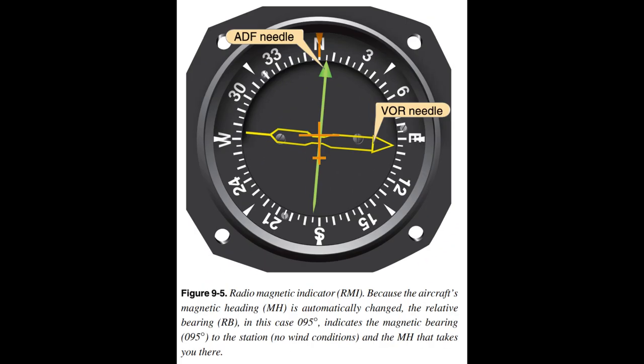An RMI example indicates a heading of 360 degrees, MB to the station of 005 degrees, and MB from the station of 185 degrees. The ADF can be used to plot your position, track inbound and outbound, and intercept a bearing. These procedures are used to execute holding patterns and non-precision instrument approaches.